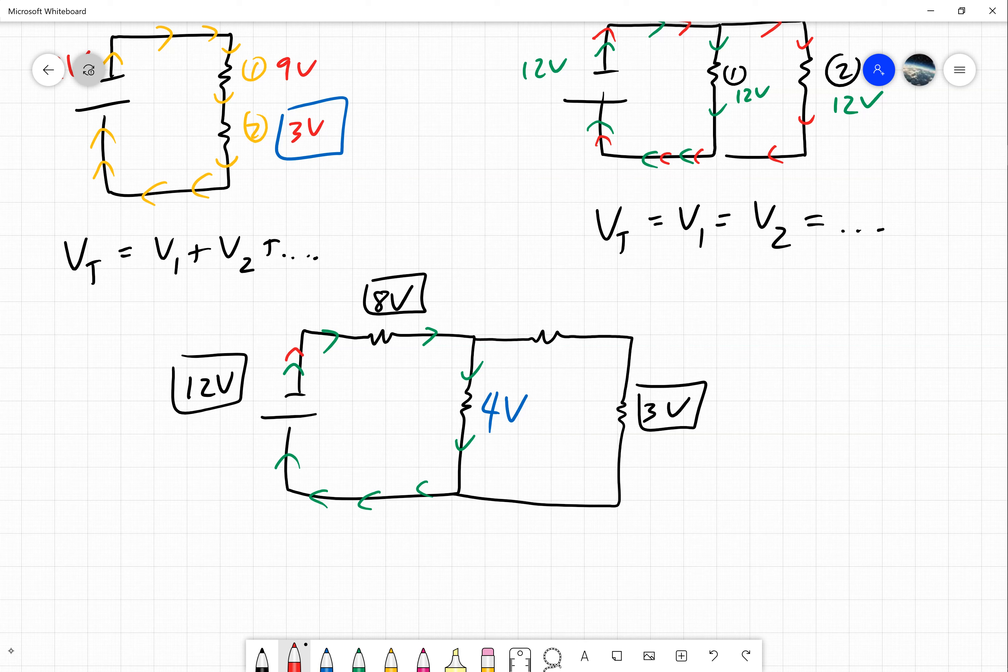If we were to look at the red pathway, which will be a longer pathway around, we can see that the red electron is going to go through three resistors. It spends 8 volts at its first resistor, some unknown amount here, and then 3 volts at the final resistor. Now since it has 12 volts in total to work with, it is going to have 1 volt at this spot.